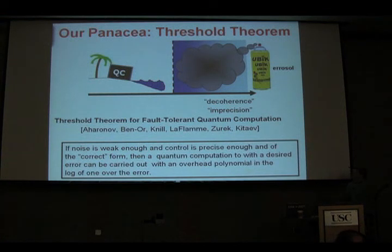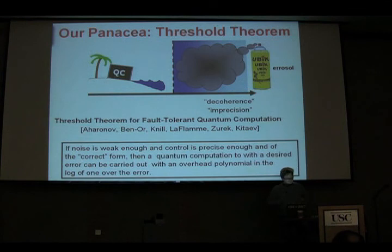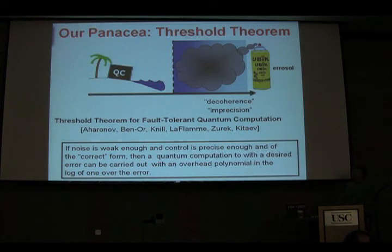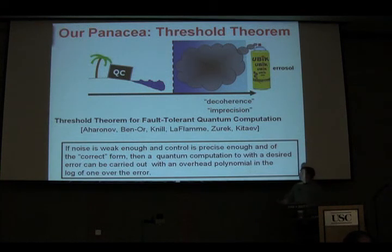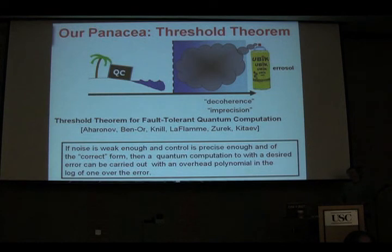If that's true, then we can perform a quantum computation with some error in an overhead which is just polynomial in log of one over that error. This is not a horrible scaling — in real life it might be fairly horrible, but it tells us there's some hope. There is some nice island of quantum computing if we can get there. This is most important because it tells us that the model of quantum computation really is a real model of computation. Without this, it's really hard to even talk about quantum computing as a valid model.